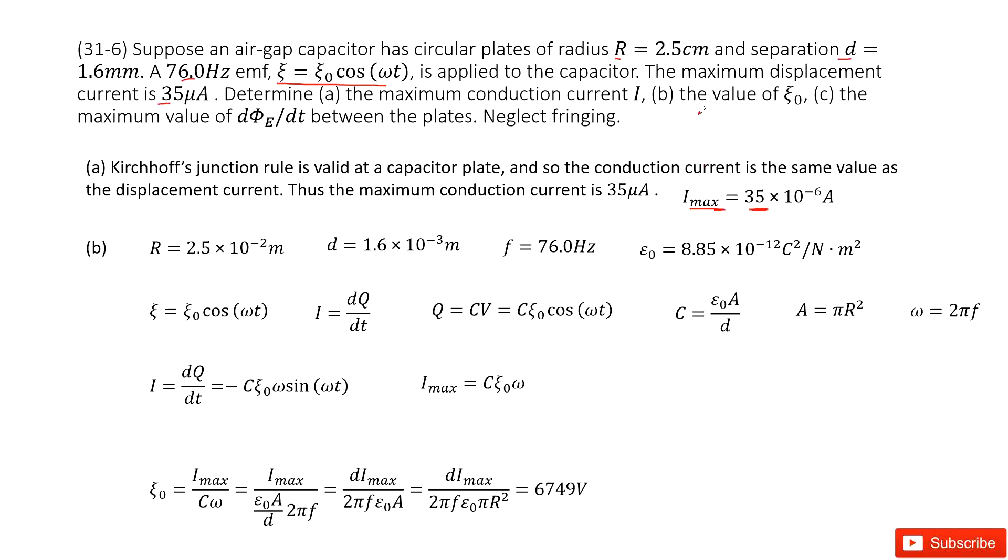Second part, we need to find the value of epsilon naught. So where is epsilon naught? It is the maximum voltage for the power supply. This epsilon is also maximum.